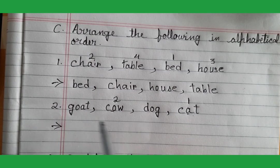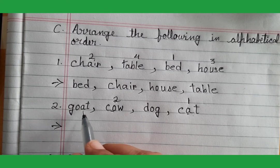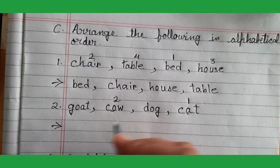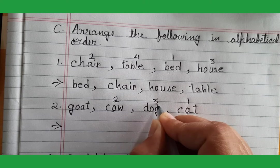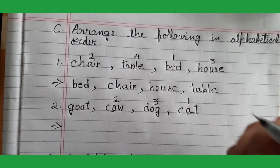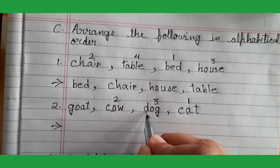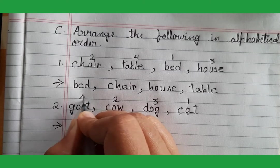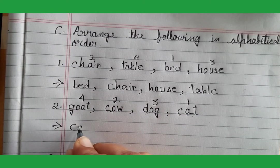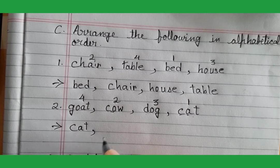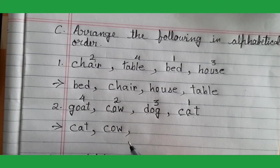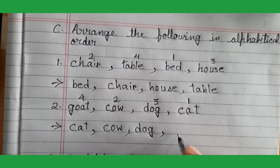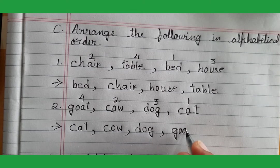Two more words are remaining: 'dog' and 'goat.' In the alphabet, does D come first or G? D comes first. So 'dog' will be third — A, B, C, D — after C, D comes. And 'goat' will be fourth. So the final order is: cat, cow, dog, goat.